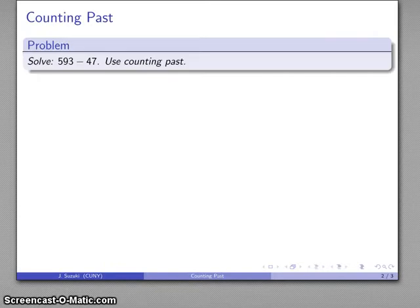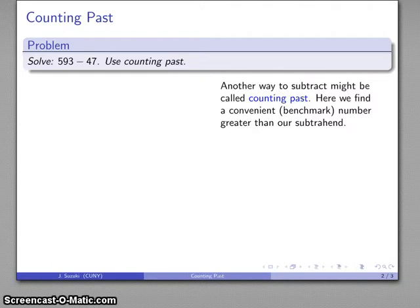For example, let's take the problem 593 minus 47. Counting past is based on the idea that you can take more than you're supposed to but you should return the excess. We're all familiar with this as adults because this is how we operate with our taxes—we pay out taxes during the year and then file for a refund because we paid out too much.